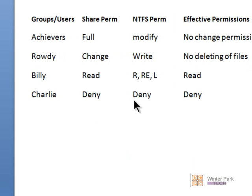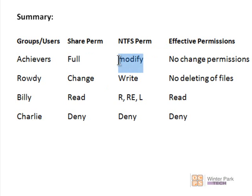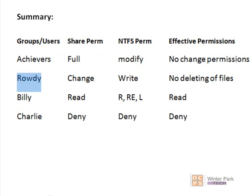Now let's review what we've done on our data folder that we've shared. We added the Achievers group, which included the White Hat account — they now have Full Control Share permissions and Modify permissions under NTFS. With Full and Modify, the White Hat account cannot change permissions or give other users and groups permissions in this folder. We also added the Rowdy group, and gave them Change Share permissions and Write NTFS permissions. This gives Black Hat the ability to open, create, and edit files, but Black Hat is not allowed to delete files.